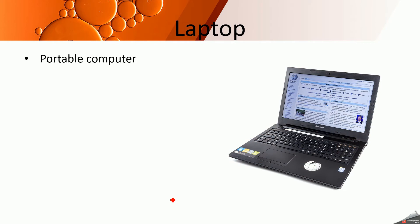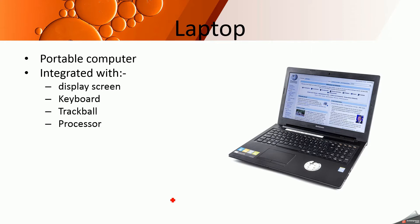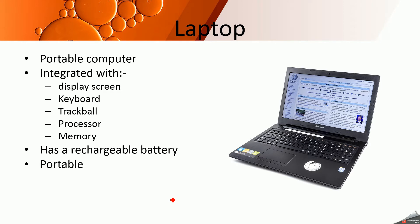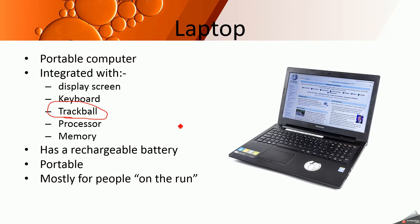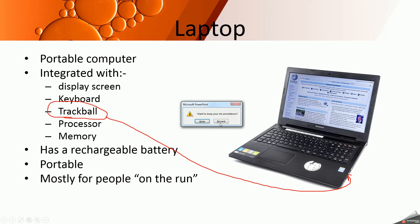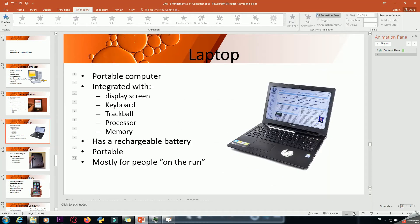Next is a laptop. We already know what a laptop is — it is a portable computer integrated with a display screen, keyboard, trackball, processor, and memory, and has a rechargeable battery. It is mostly for people who are always traveling. A trackball is a device that can be attached to one of the USB ports.